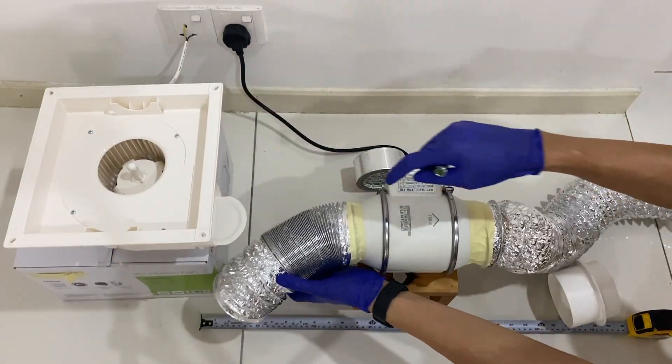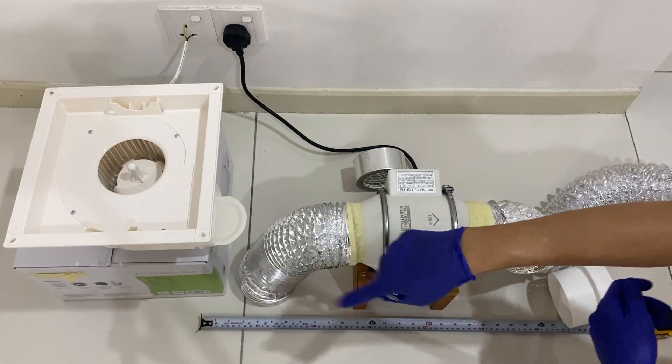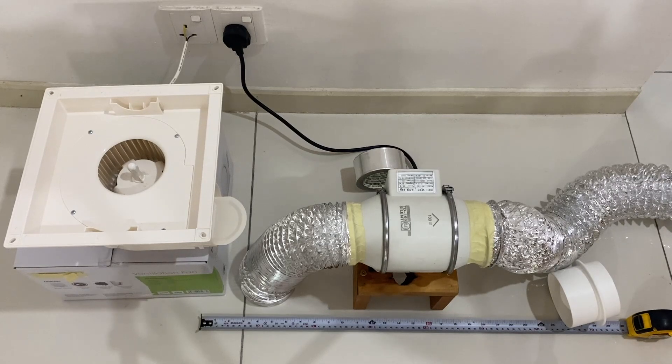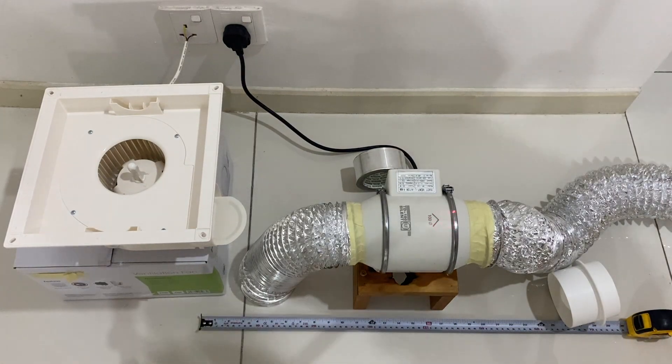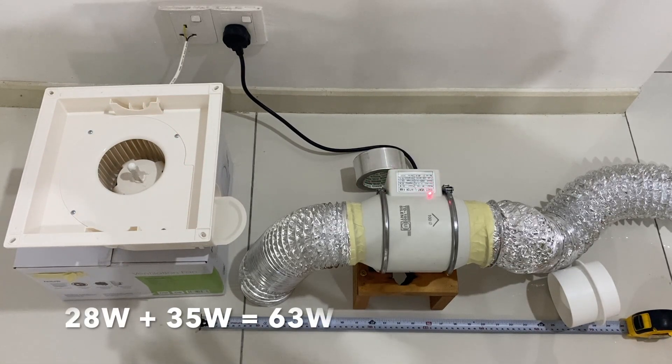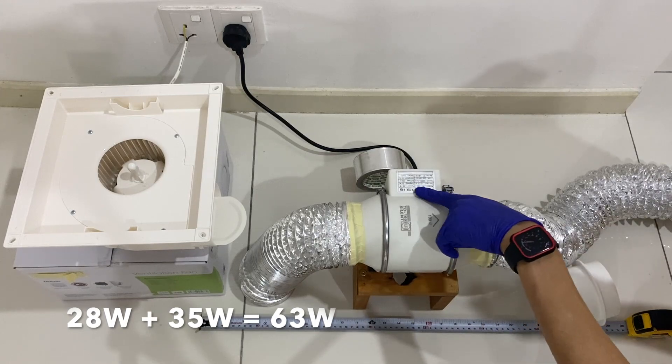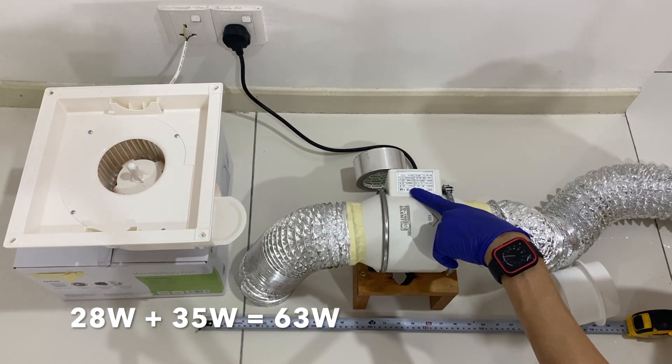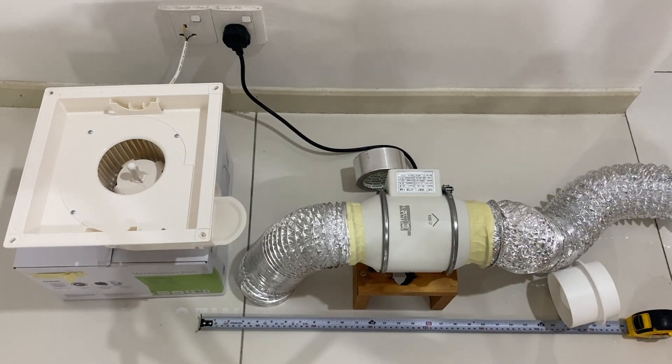Now the distance from this fan to this fan or this case is only one foot. My total length here in this project is roughly 19 feet. Otherwise if a hose length is less than 10 feet, I think just one of this is good enough because one of this machine is roughly 28 watts plus this says here 35 watts. So 35 plus 28, total 63 watts of energy consumption.